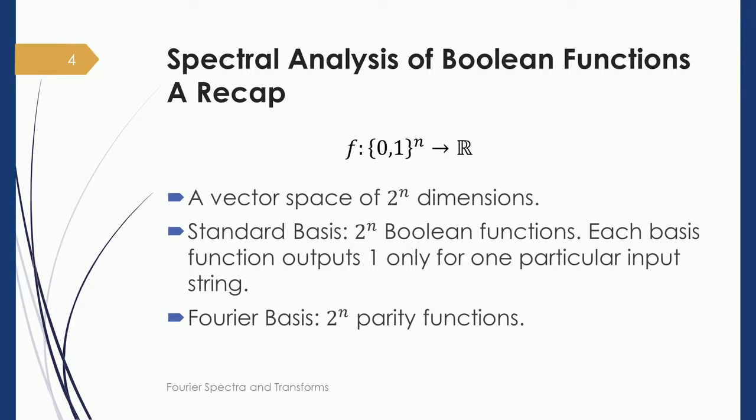We also have an alternative Fourier basis for Boolean functions. There are 2ⁿ parity functions that together form this Fourier basis. Each parity function refers to a subset of the n bits and evaluates to 1 when all bits in that subset are 1 and the others are 0. These parity functions themselves form an orthogonal basis for this vector space. A Fourier transformation is therefore a transformation of a vector's representation from the standard basis to the Fourier basis.